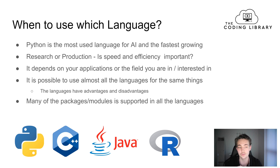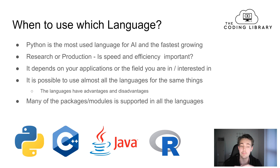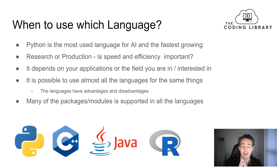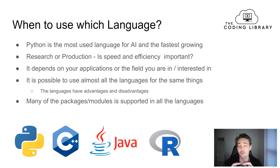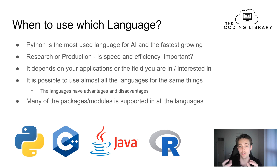It's possible to use almost all languages for the same things, but each language has its advantages and disadvantages. You can do both machine learning algorithms and deep learning neural networks in all of these programming languages. Many packages and modules are supported across all languages. For example, the deep learning framework Keras is supported in C++, Python, Java, JavaScript, and other languages. It really depends on what you're most comfortable with — you can use Python for production or C++ for research, because all of them can be used for the same things.